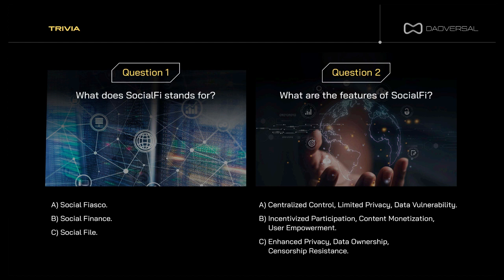Next, question two: what are the features of SocialFi? A, centralized control, limited privacy, and data vulnerability; B, incentivized participation, content monetization, and user empowerment; or C, enhanced privacy, data ownership, and censorship resistance. This is a bit tough, but we did explain this in our slides. Five seconds for the audience. The correct answer is C — enhanced privacy, data ownership, and censorship resistance.